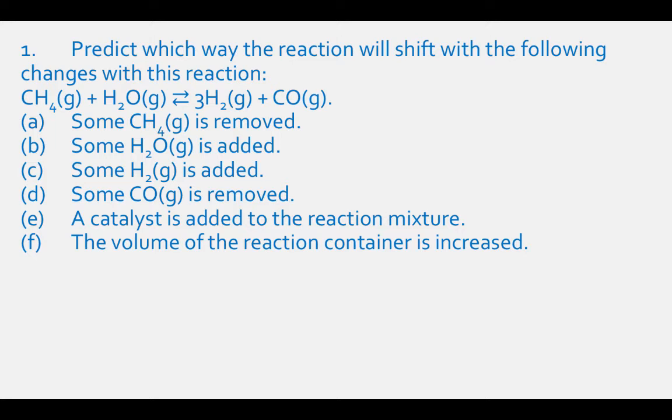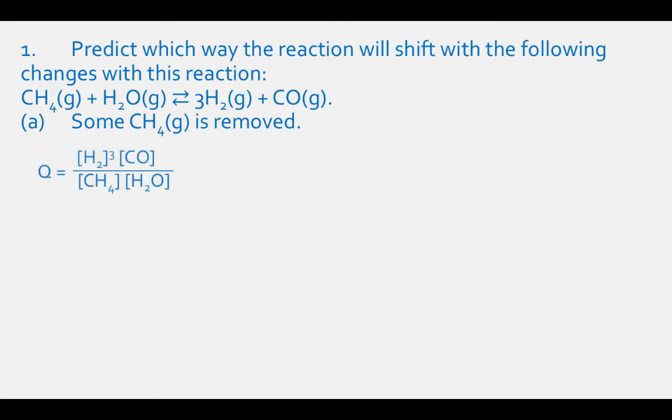First, let's write the Q expression for this reaction: the concentration of H2 cubed times the concentration of CO, divided by the concentration of CH4 times the concentration of H2O. Parts A through F: A) some CH4 gas is removed; B) some H2O gas is added; C) some H2 gas is added; D) some CO gas is removed; E) a catalyst is added; F) the volume of the reaction container is increased.